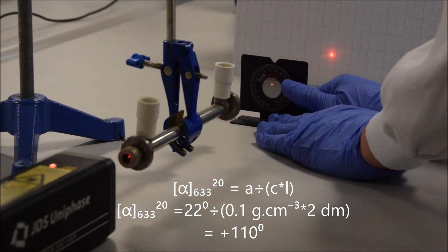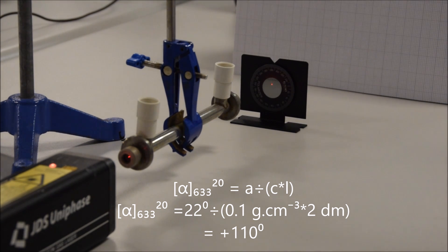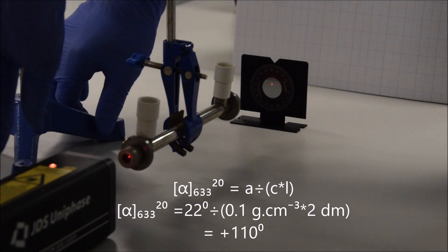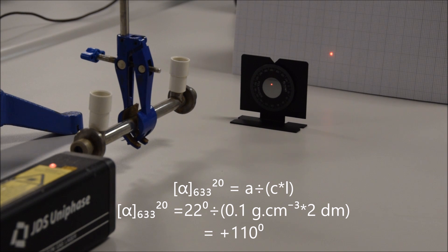We can then put this into the formula for determining specific rotation and we can figure out what the specific rotation of this material is. If you do that math, you get 110 degrees. It's 110 degrees per gram per centimeter cubed per decimeter. You've got to make sure you get your units right before you do that calculation. If I take it out of the way, the light makes it through the polaroid again.